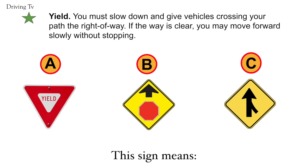Yield. You must slow down and give vehicles crossing your path the right of way. If the way is clear, you may move forward slowly without stopping. The correct answer is A. Yield.